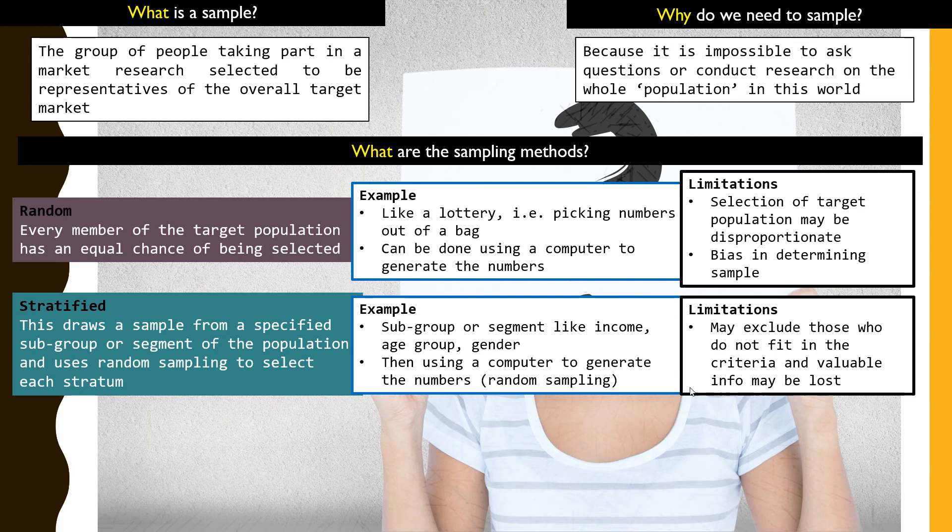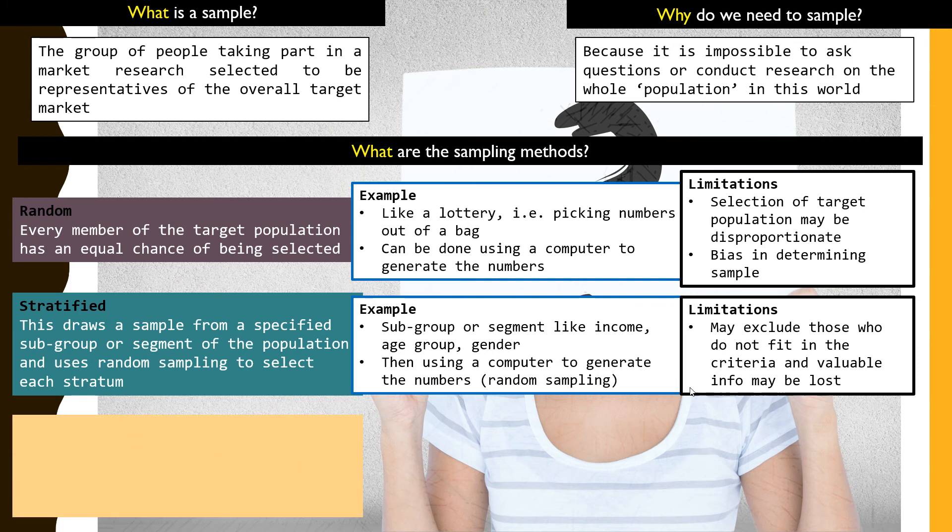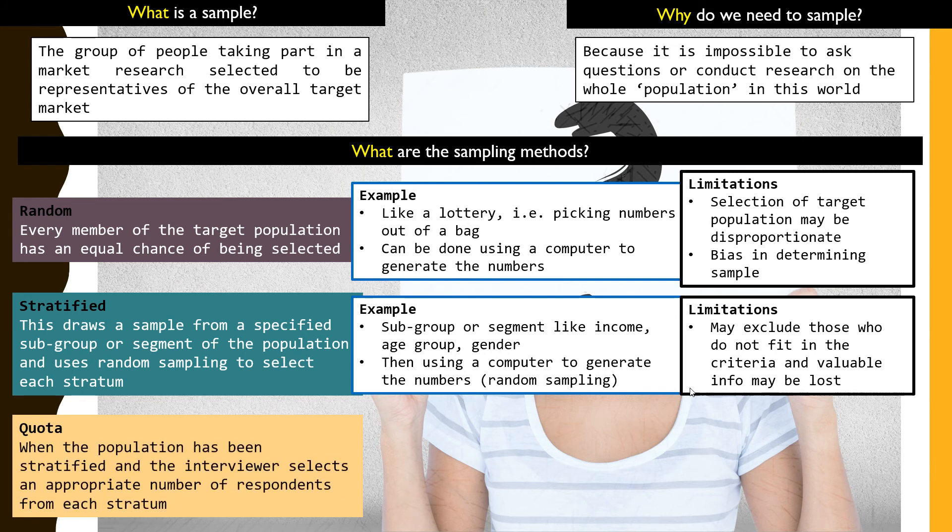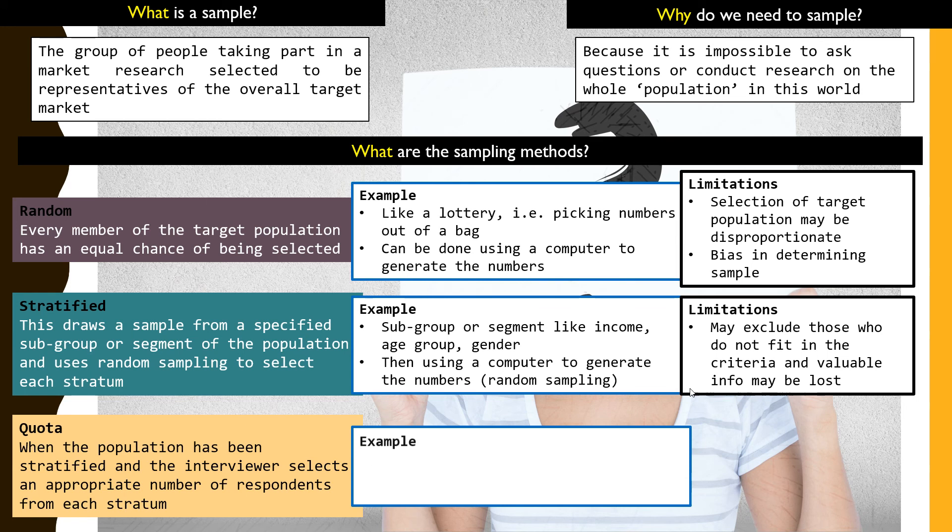Another method of gathering or sampling is through quota sampling. Once we have stratified the population and we know the subgroups like income group, age group, gender, the interviewer can now select an appropriate number of respondents from each stratum. Quota is based on looking at different segments that have already been stratified and taking a certain percentage from each of those levels into their research.